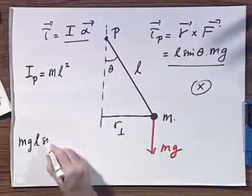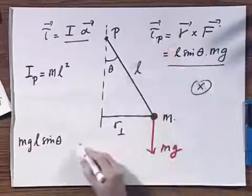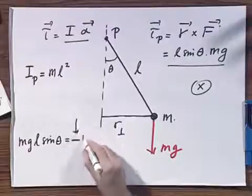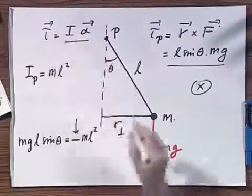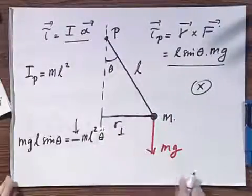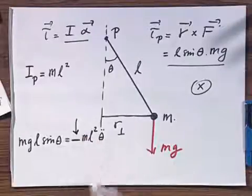And so I get Mg times L times the sine of theta, which is the magnitude of the torque, equals minus ML squared, which is the moment of inertia about that point P, times theta double dot. This minus sign is crucial. It gives it the restoring characteristics.